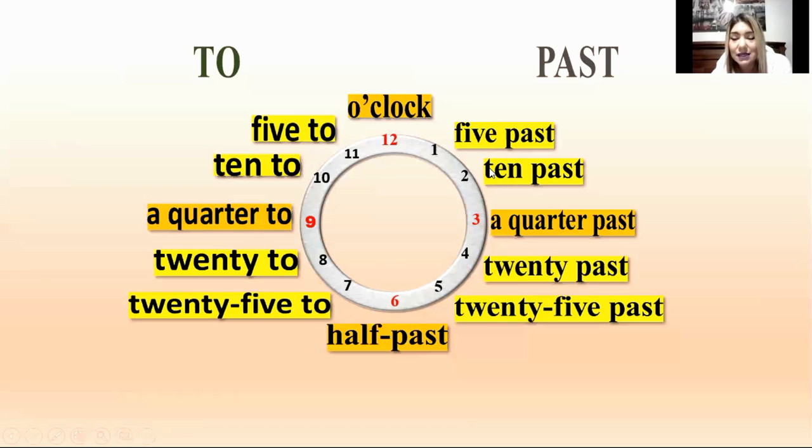Del doce al seis, siempre la hora va a ser past. Entonces, decimos five past, ten past, a quarter past, twenty past, twenty-five past. Lo distinto es cuando nosotros vamos del seis al doce. Acá, si se fijan, ocupamos el mismo número, pero ahora no es con past, sino que es con to. Porque esto ya es veinte para las cuatro, un cuarto para las dos. Y entonces, vamos de seis a doce con el to. De doce a seis con past. Las doce o'clock en punto y las seis half past. Es un tipo difícil, sé, pero si estudiamos muy duro y practicamos el concepto, va a ser más fácil.